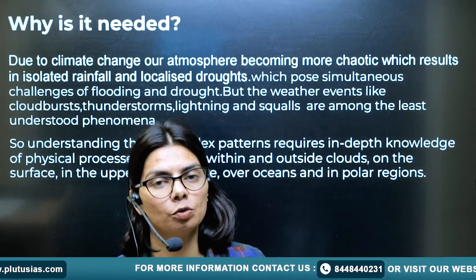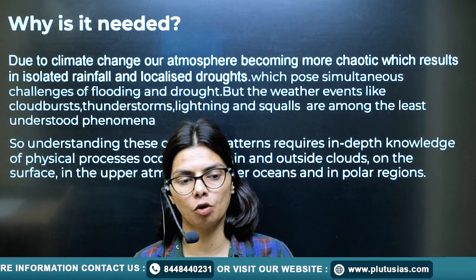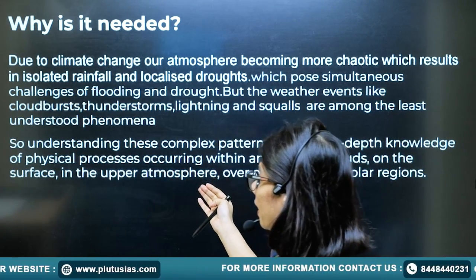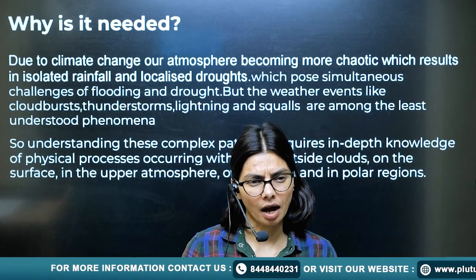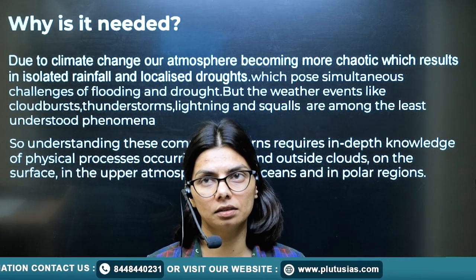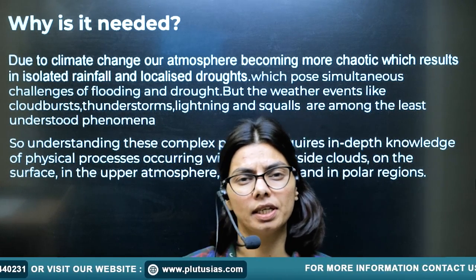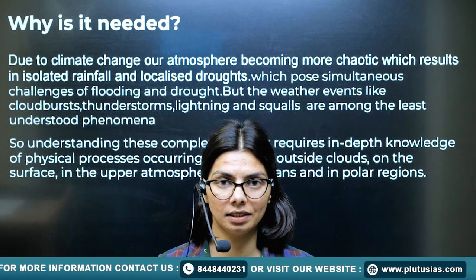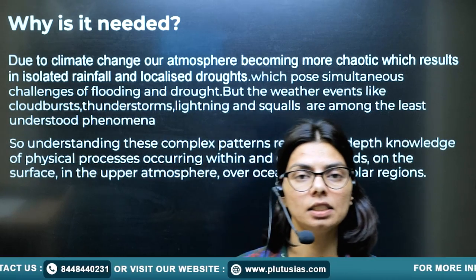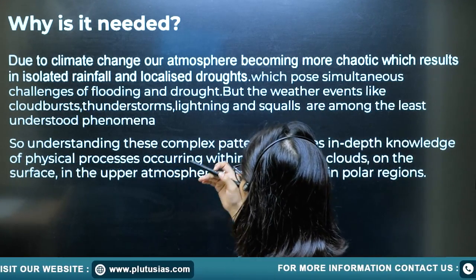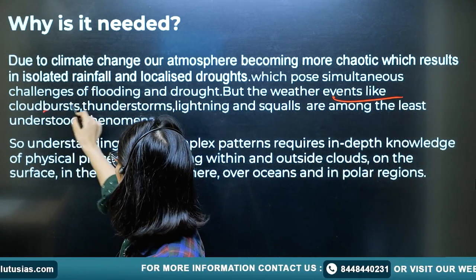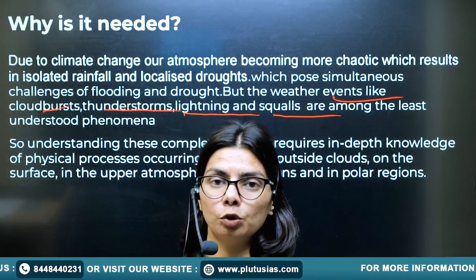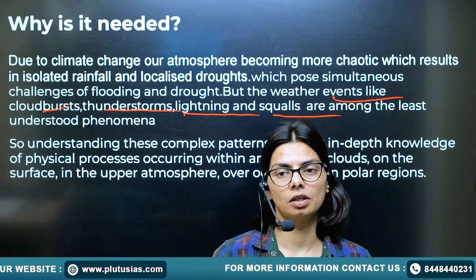Why is it needed? This is a very important question — why are we spending so much fund on this mission. Due to climate change, our atmosphere is very chaotic and weather events are very unpredictable day by day. Somewhere heavy rainfall and somewhere localized droughts are prevalent. Weather events like cloudbursts, thunderstorms, lightning, and squalls are phenomena not yet well understood, which is why we have failed to accurately predict weather forecasts.